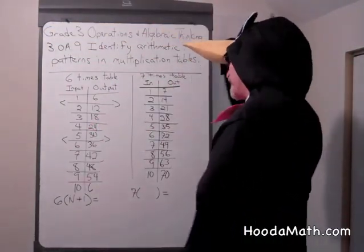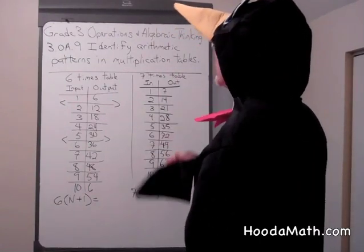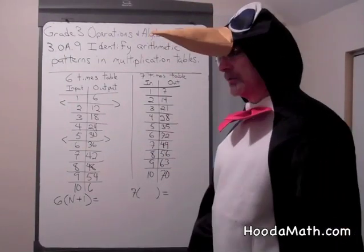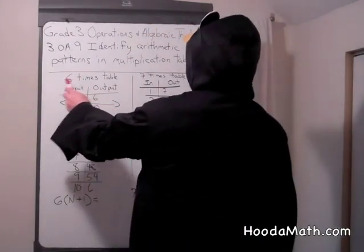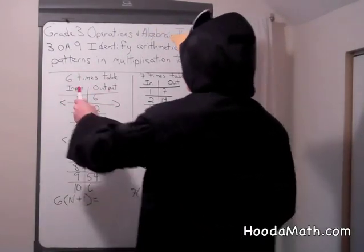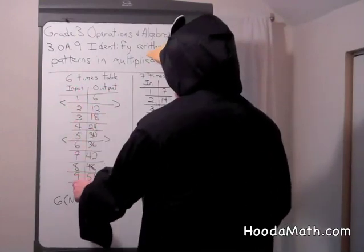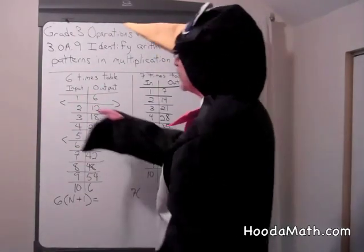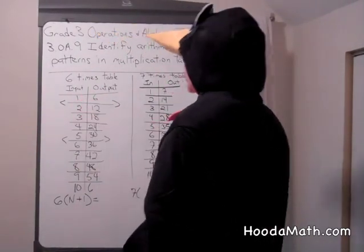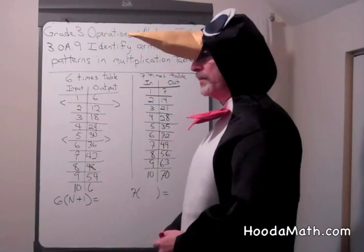We're going to talk about what are the arithmetic patterns in multiplication tables. This is the six times table. The input: one, two, three, four, all the way up to ten. And the output, what happens? So, when you multiply six times the input, what do you get? And are there any patterns?